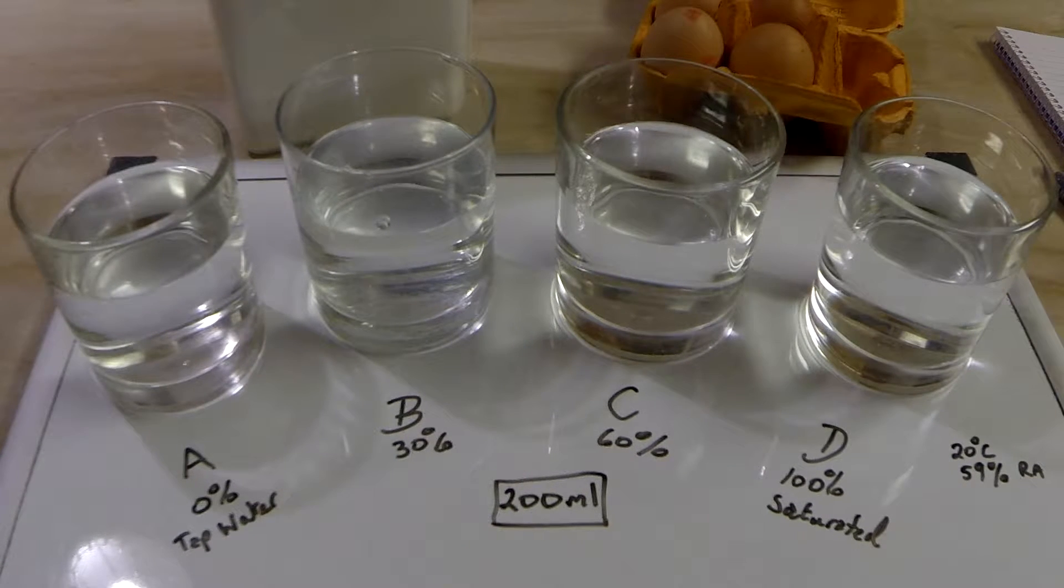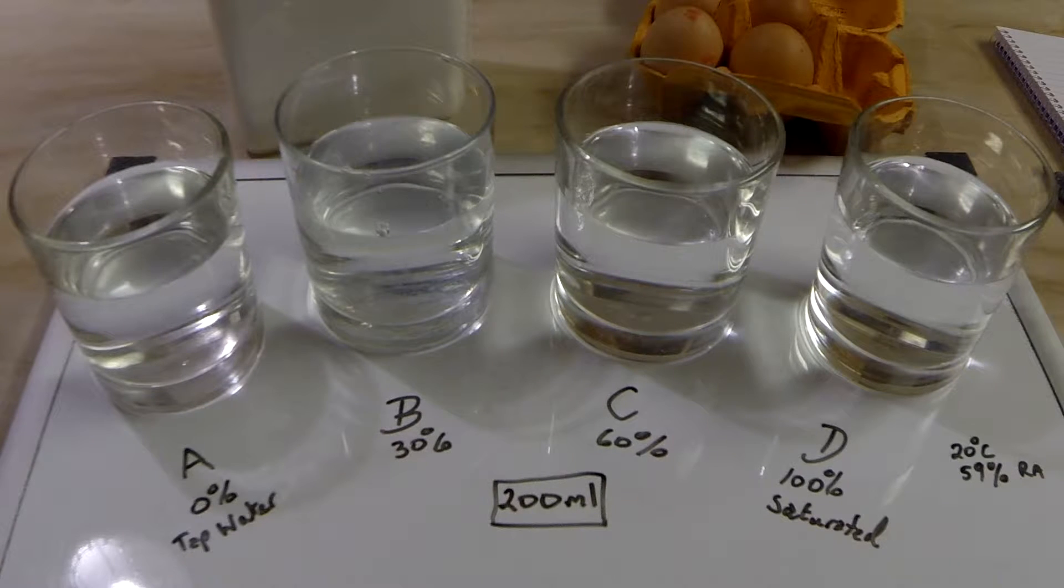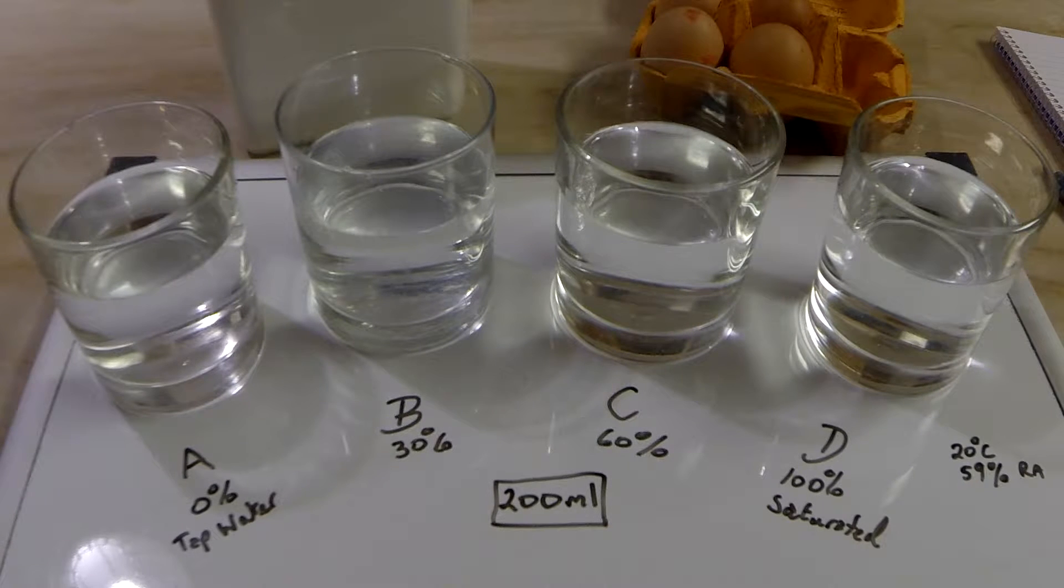So there we are then. Each glass now has 200 milliliters of water. No salt in them yet. And the water is all at the same temperature. And now it's time to add some salt to glass D to see how much salt will take it to 100% saturation.